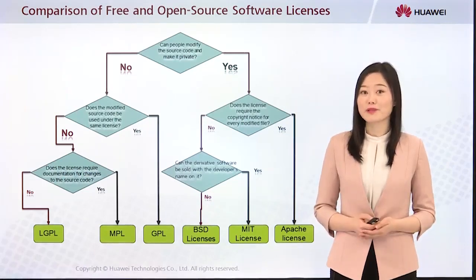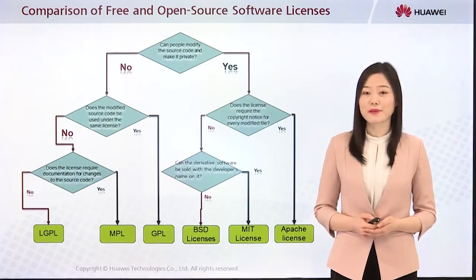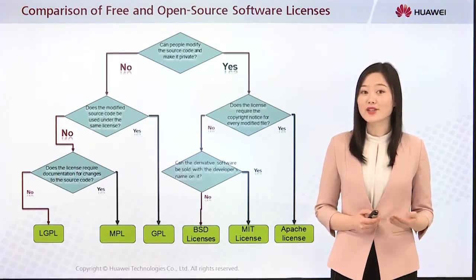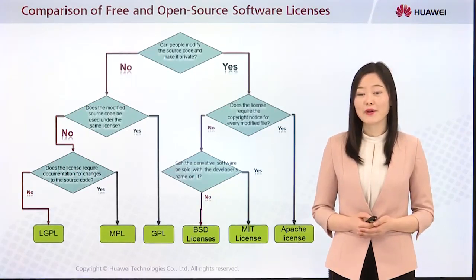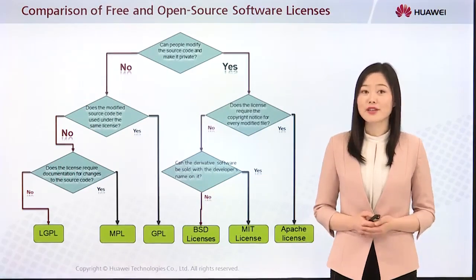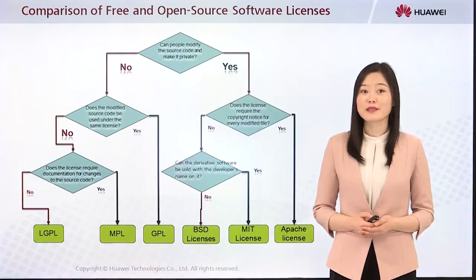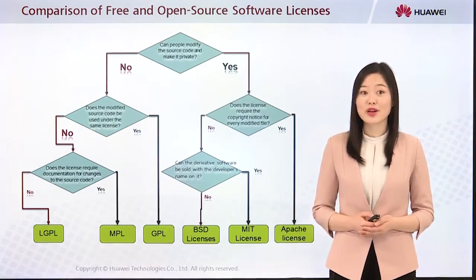If I make my software open source, can other people modify the code and make it private? The answer depends on what license the people use. BSD licenses, Apache license, and MIT license allow end users to make the modified code private, while GPL, NPL, and LGPL grant users rights to share the code. However, GPL is different from LGPL and NPL. GPL forces the people who modify the code to share the code, while LGPL and NPL let the people decide whether to share the code or not.